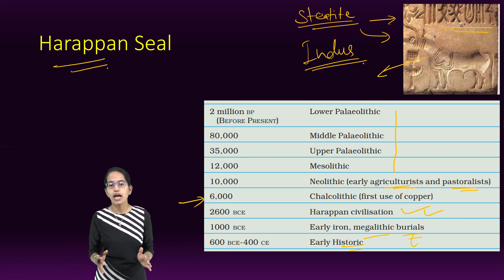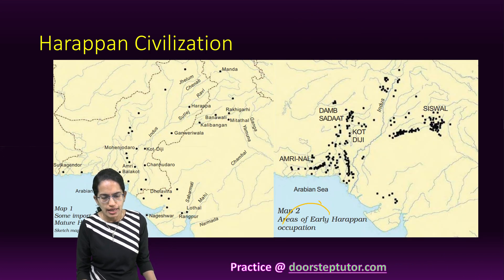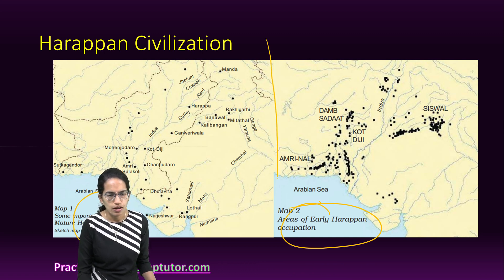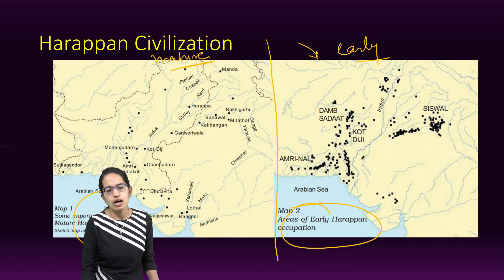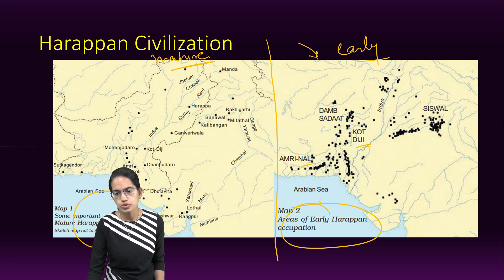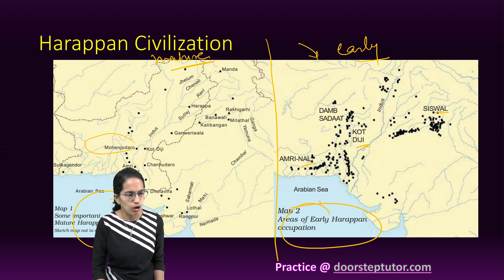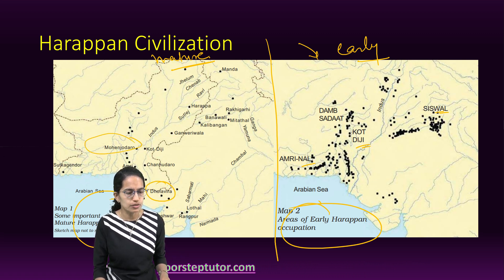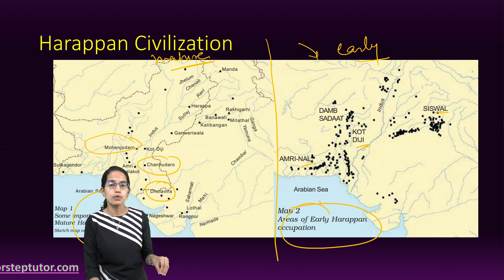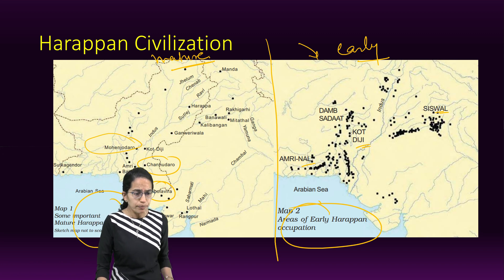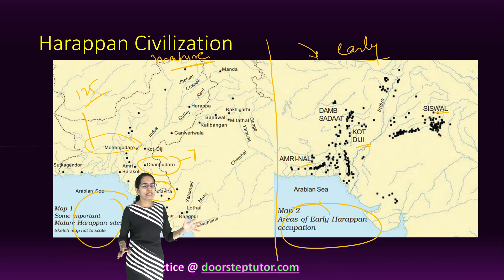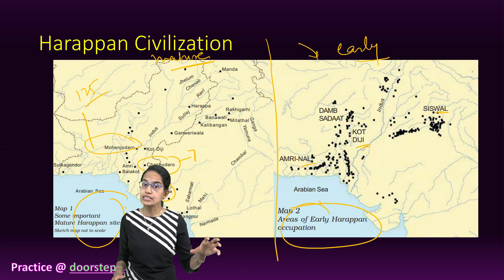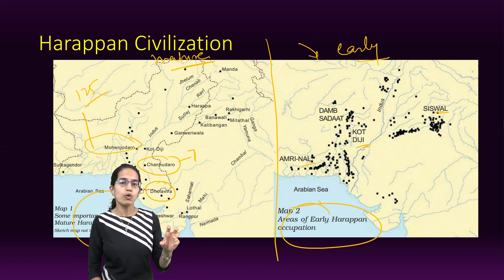The Harappan civilization has been demarcated into the early Harappan and the mature Harappan. Early Harappan sites include Amirnal, Khoddodji, and Siswal. Then we have locations of Mohanjodaro, Dholavira in Gujarat, and Chandudaro, which is an important location. A major difference: Chandudaro is only 7 acres in area, whereas Mohanjodaro is around 125 hectares. When the expanse is so vast, we understand that Mohanjodaro and Harappa were the major towns, while Chandudaro was a relatively small town.